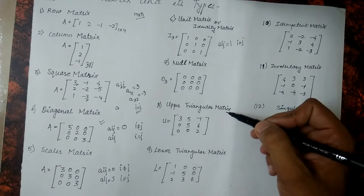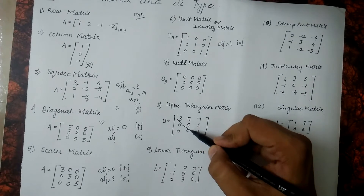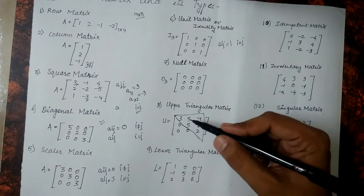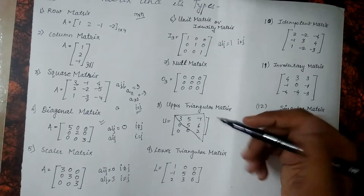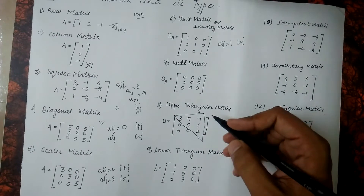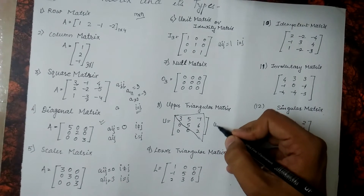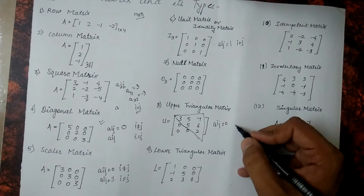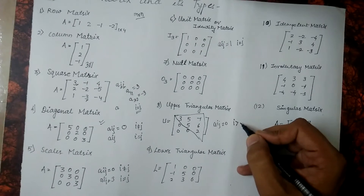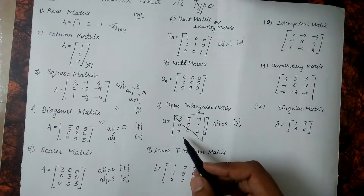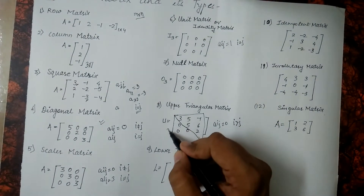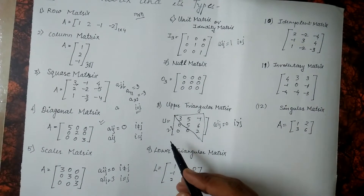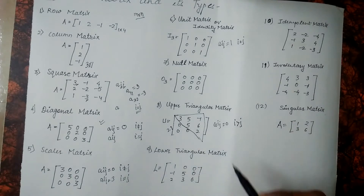Another matrix is the upper triangular matrix — see, a triangular structure is being formed. In this matrix, a of ij is equal to 0 if i is greater than j. For example, for this element the value of i is 2 and j is 1, so i is greater than j, making that element 0.